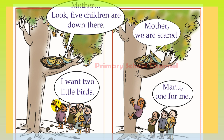How many children are there? Five children — one, two, three, four, and five. How many children are there? Five children.